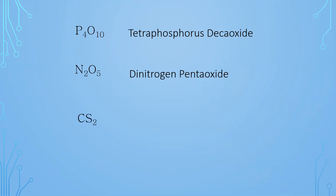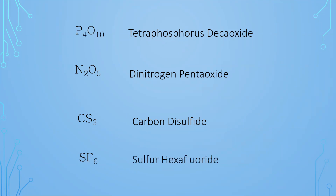CS2 — C is carbon, S is sulfur. Sulfur becomes sulfide. There is one carbon and two sulfurs, so this is carbon disulfide. We do not use mono on the first element. One more: SF6 — sulfur and fluorine. One sulfur, six fluorine. Fluorine becomes fluoride. So we have sulfur hexafluoride.